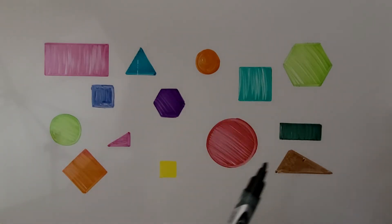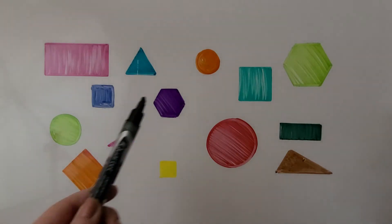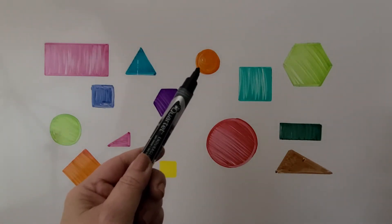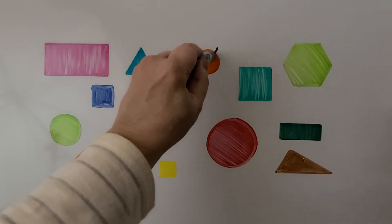Which of these are circles? I see one here. Do you see this one? We can put an X on it. That's a circle.